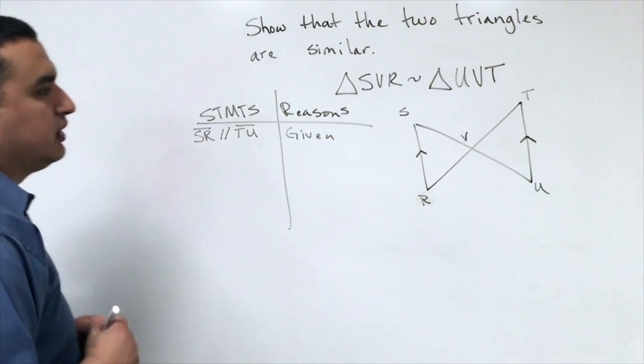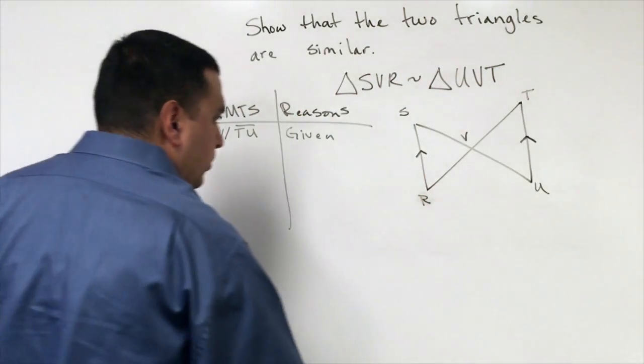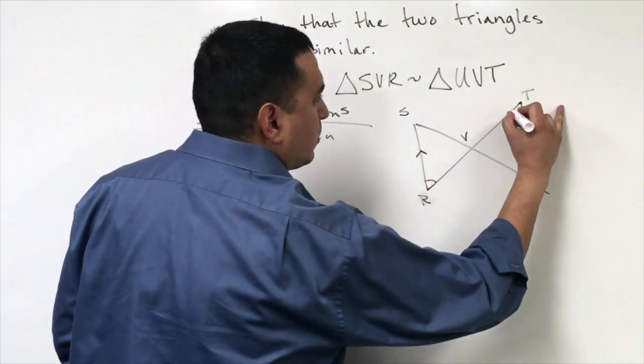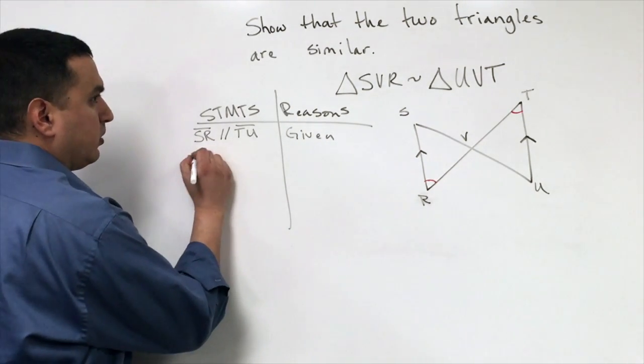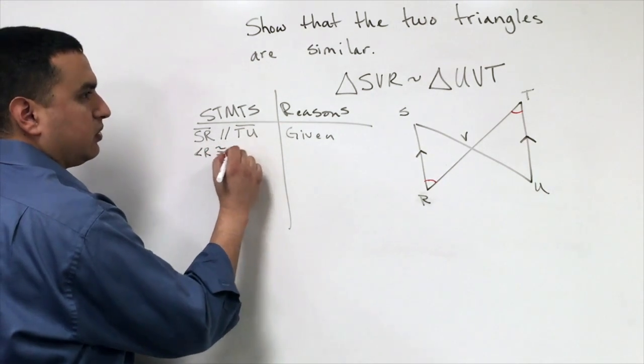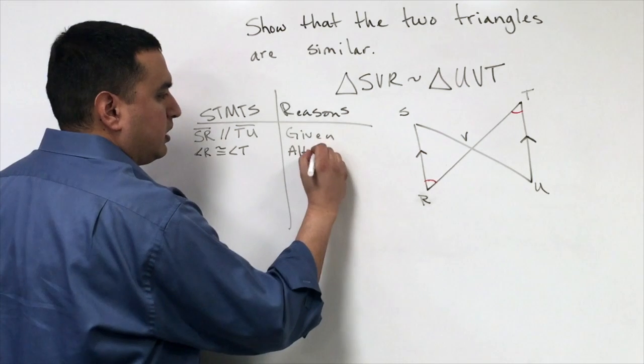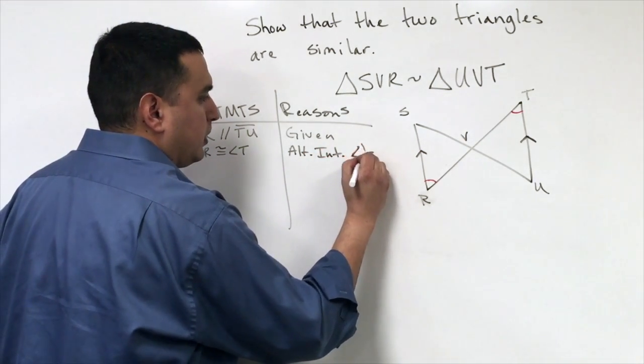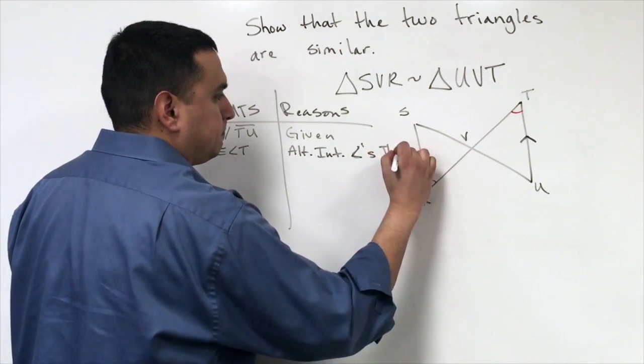Now, because of that, remember that we have two parallel lines intersected by a transversal. So that's going to tell us that this angle R right here is congruent to this angle T up there. So I know angle R is congruent to angle T and that would be our alternate interior angles theorem.